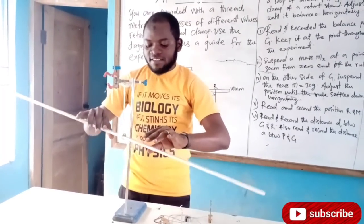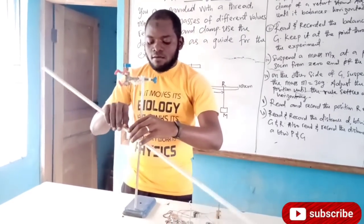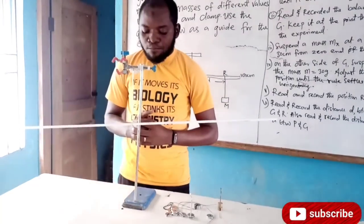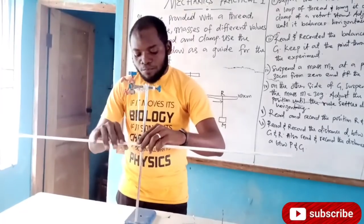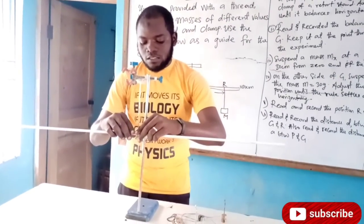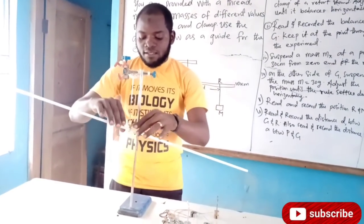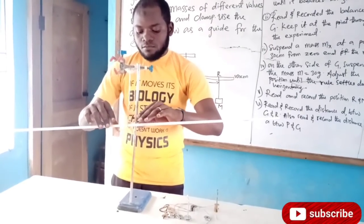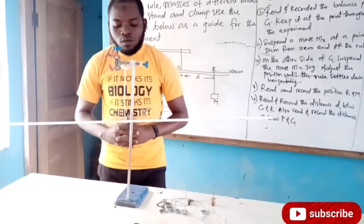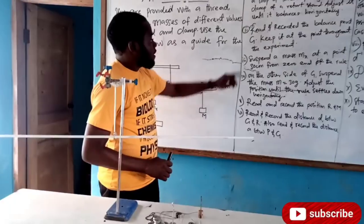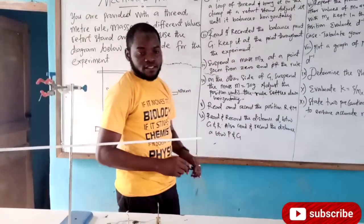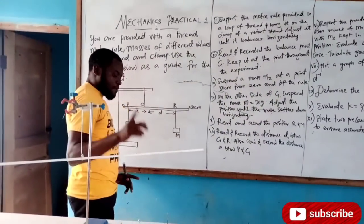I'm trying to get the balancing point. Let me adjust it back a bit — you can see now that the meter rule balances, and the balancing point is here at my zero point. Now it's balanced horizontally. The question says: read and record the balance point G and keep it at that point throughout the experiment. So there is need for me now to take down the record of the balance point.